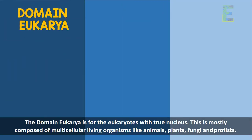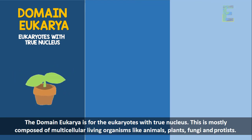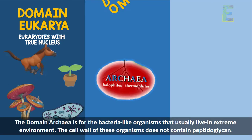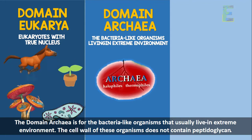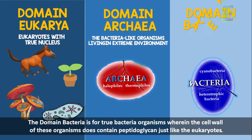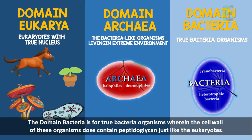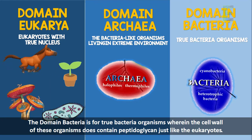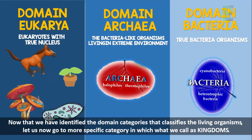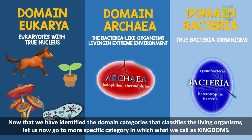The new domain categories are the following. The domain Eukarya is for the eukaryotes with true nucleus, mostly composed of multicellular living organisms like animals, plants, fungi, and protists. The domain Archaea is for bacteria-like organisms that usually live in extreme environments; the cell wall of these organisms does not contain peptidoglycan. The domain Bacteria is for true bacteria, wherein the cell wall does contain peptidoglycan.